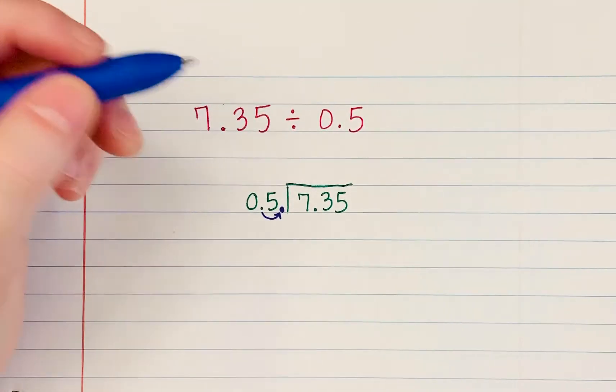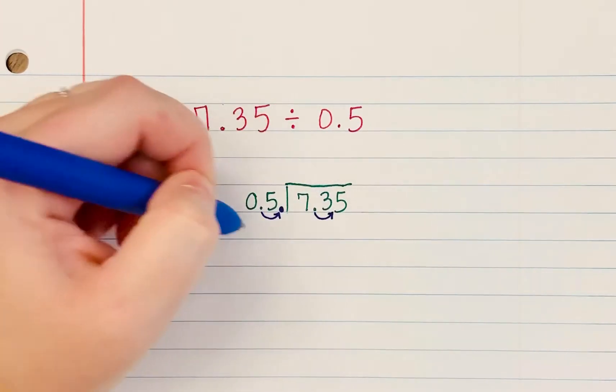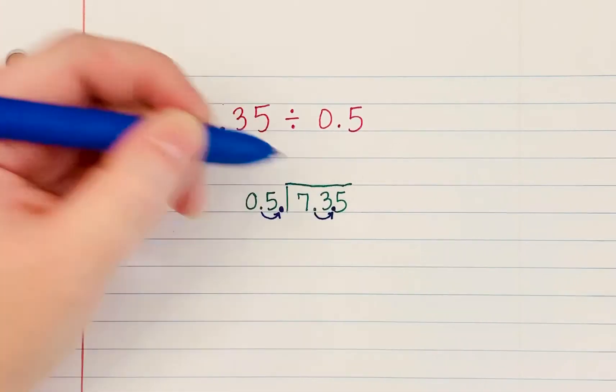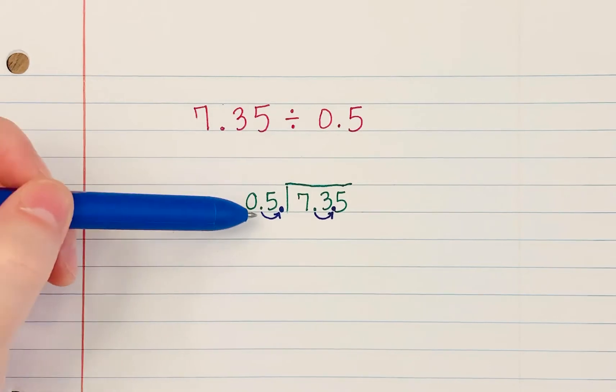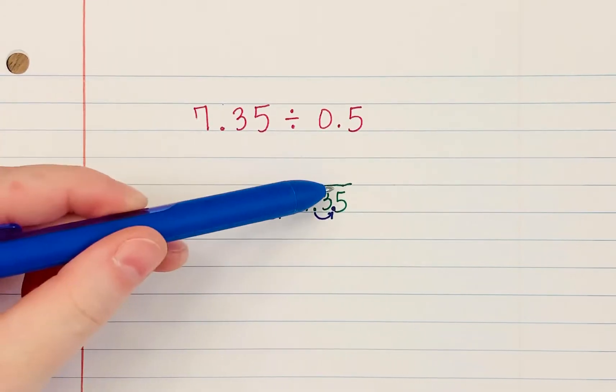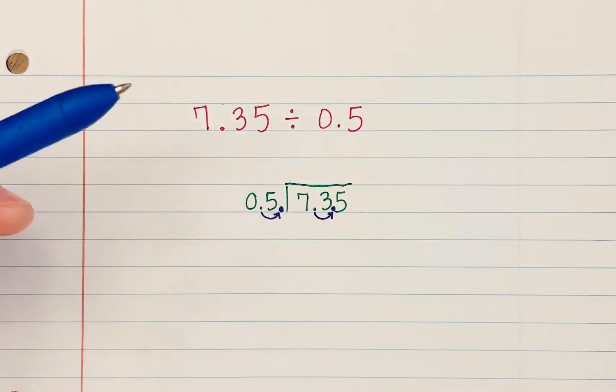Step two is another slide. You take this decimal in the dividend and whatever we did to the one in the divisor, we do the same thing to the dividend. So that's the slide, slide part. If I had to move this one two times, I would move this one two times, but I only had to move it one time.